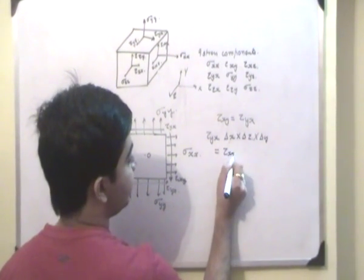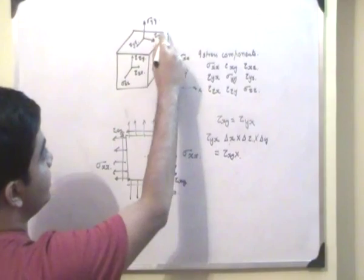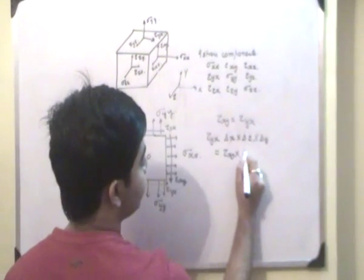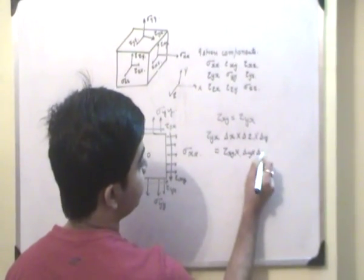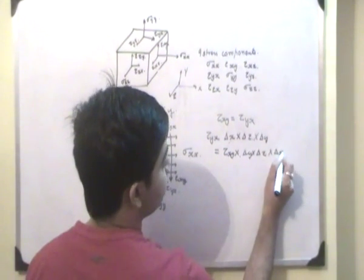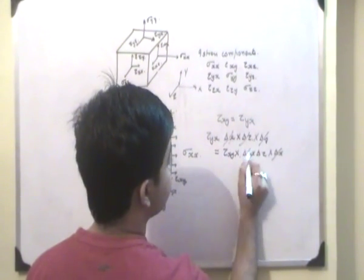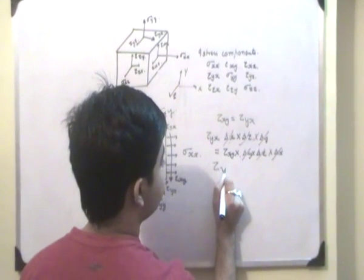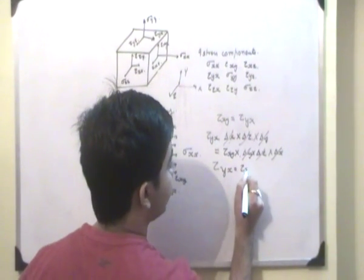And tau xy will act about this area. So it will be delta y into delta z into this distance that will be given by delta x. All these things cancel out, and essentially we are left with tau yx is equal to tau xy.